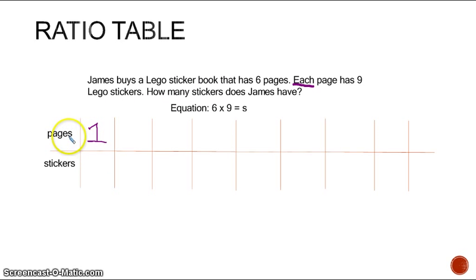So if on one page of James's Lego sticker book, he has 9 Lego stickers. I know this because it tells me in the story problem. There's 6 pages in the Lego sticker book and each page has 9 stickers, so 1 page has 9 stickers. So on 2 pages of that Lego sticker book, that means he would have another 9 stickers, but because it's 2 pages and not just 1, that means on 2 pages he would have 18 stickers total.